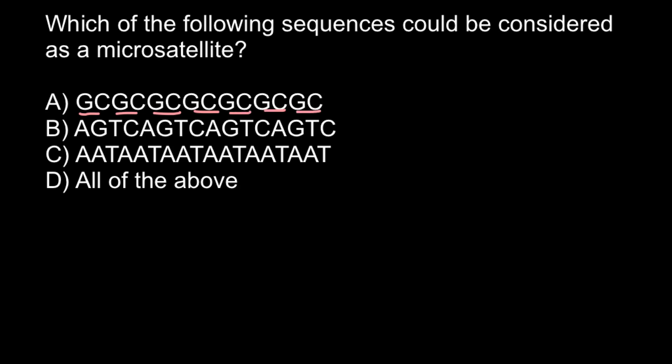A microsatellite is just a repetitive sequence. In the first case we have a repetition of two bases. Comparing with the second example, we have A, G, T, C — one repeat that is repeated over and over again. In this case it repeats four times.